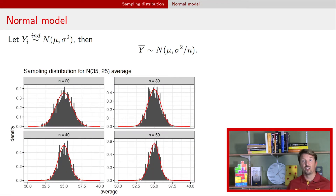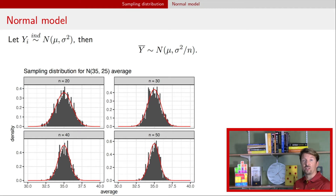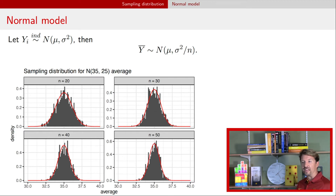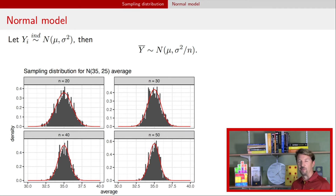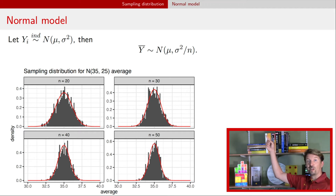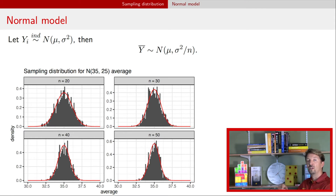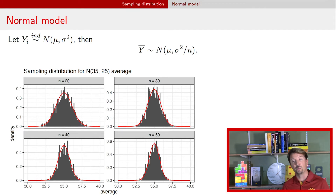Here are depicted four different realizations of those sampling distributions, with a thousand realizations from each of the models. The models differ across facets by sample size, ranging in value from 20 to 50. Overlaid on top of the histogram is the true sampling distribution — that density curve is just the density of that particular normal. We can see that those histograms generally look similar to the sampling distributions we can calculate analytically.